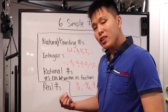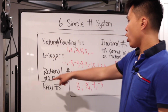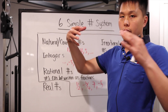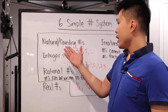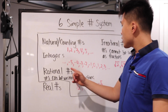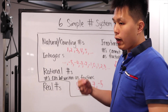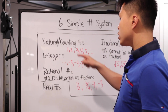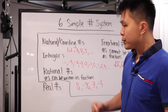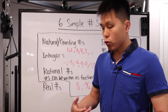The last one is real numbers. Real numbers is this all-encompassing group — it includes all the natural counting numbers, the integers, the rational numbers, and the irrational numbers. So it's all encompassing. In algebra, most likely you'll be working in one of these four groups, which are all inside the real number group.